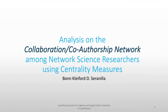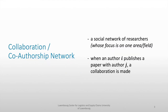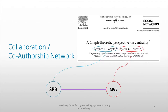Let's start with the first element: collaboration and co-authorship network. A collaboration or co-authorship network is a social network of researchers whose focus is on one area or one field. When an author I publishes a paper with author J, a collaboration is being made. For example, the paper written by Stephen Burgatti and Martin G. Everett — they wrote a graph-theoretic perspective on centrality. Stephen P. Burgatti will be one particular node or vertex, and Martin G. Everett will be another node or vertex. Since they've written one paper, there is one edge or connection between the two of them.